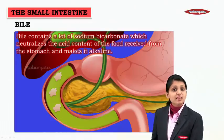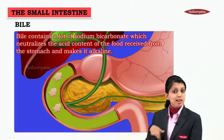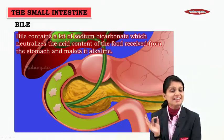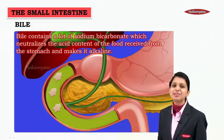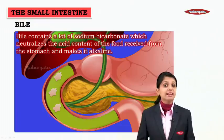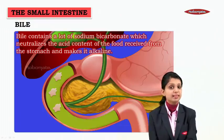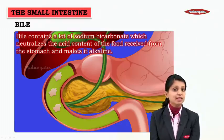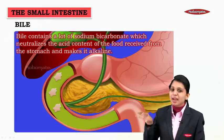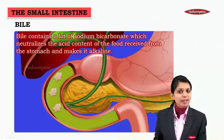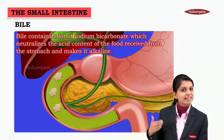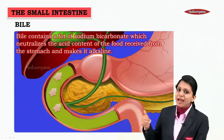The bile contains a lot of sodium bicarbonate, which neutralizes the acidic content of the food received from the stomach and makes the food chyme alkaline. Inside the stomach there were acidic enzymes, so the food became acidic — an acidic chyme was produced. When that acidic chyme enters the small intestine, because of the bile juice and the sodium bicarbonate present in it, the acidic chyme gets converted to alkaline.